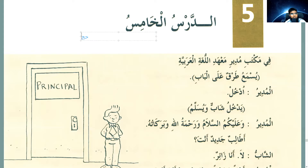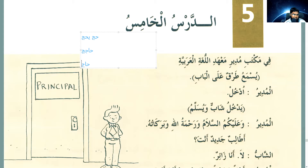Then there are the muda'af ones: hajja-yahujju. This should have become hajijun, but they didn't like that, so they kept the muda'af and it became hajjun. Similarly, marra-yamurru — the one who passes — marrun: marirun became marun. These are the subtle changes in ismul fa'il and ismul maful of the weird verbs.